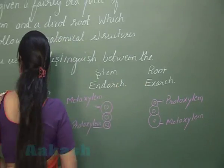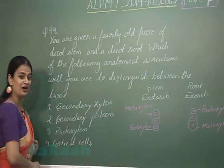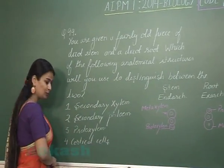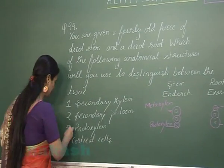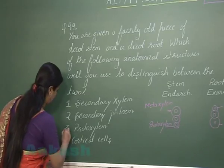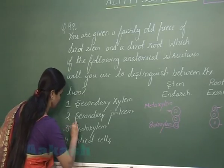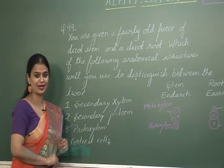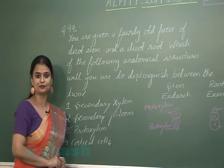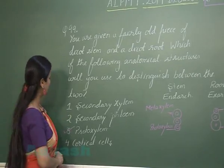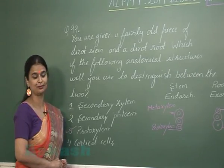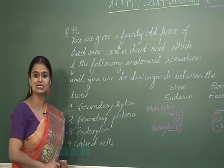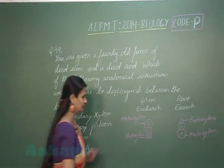In the root, proto xylem is present towards the outer side — this condition is called exarch xylem. Amongst the four options, the one which helps distinguish old dicot stem from dicot root is the position of proto xylem. The right answer for question 99 is option number 3.